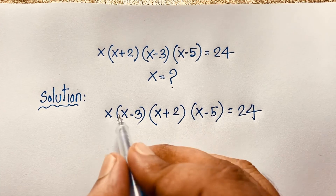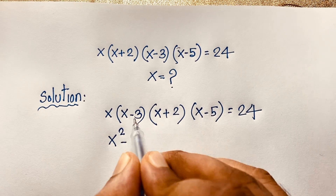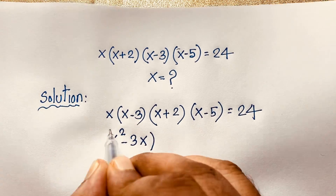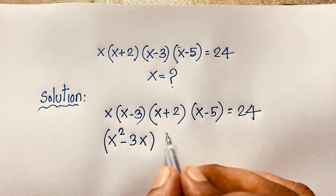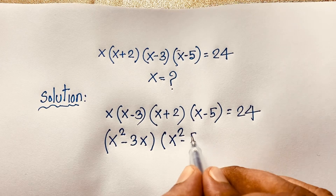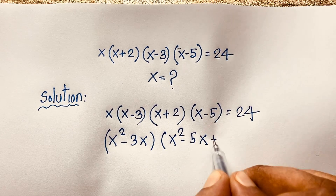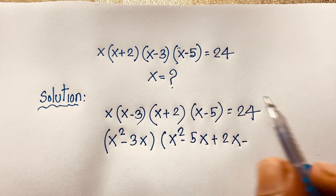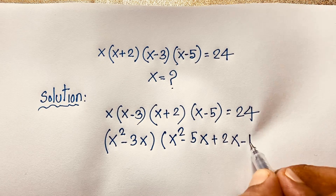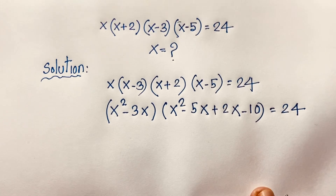Now here, x times x will be x squared, minus 3 times x will be 3x. Then x times x will be x squared, x times 5 will be 5x, x times 2 will be 2x, and 5 times 2 will be 10 — so we get (x²-3x)(x²-5x+2x-10) = (x²-3x)(x²-3x-10) is equal to 24.